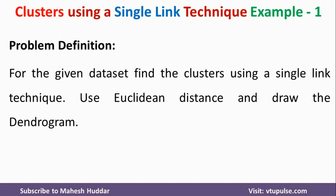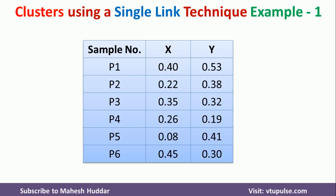Use Euclidean distance to find the distance between two points and also draw the dendrogram. In this case, we have been given a dataset consisting of six samples and two attributes. X and Y are the two attributes, and P1 to P6 are the samples.